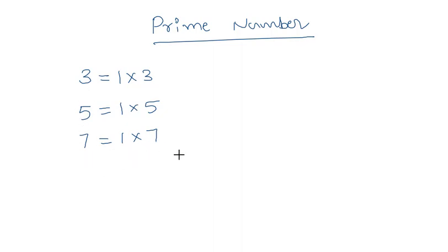So 3, 5, 7, and so on. These numbers are called prime numbers.